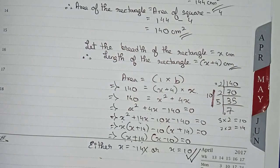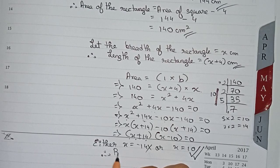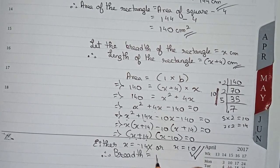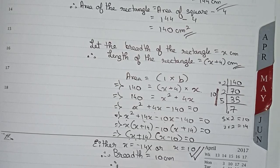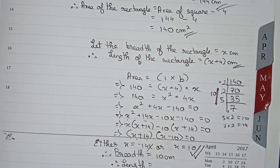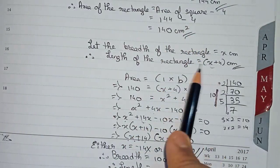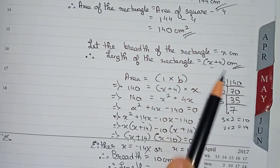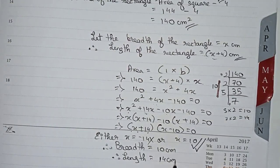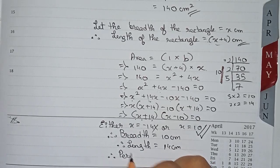Since x represents the breadth of the rectangle, therefore breadth is equal to 10 centimeters. Therefore, the length is equal to x plus 4, which means 10 plus 4, so length equals 14 centimeters.